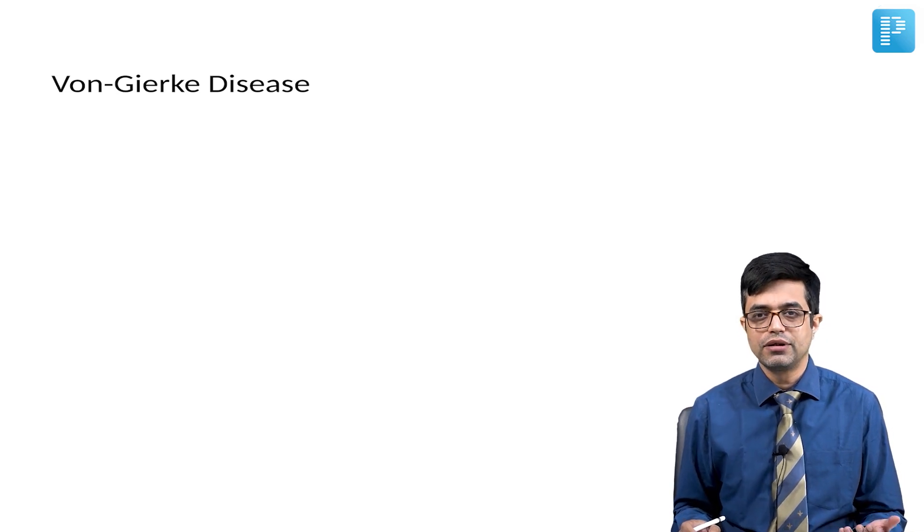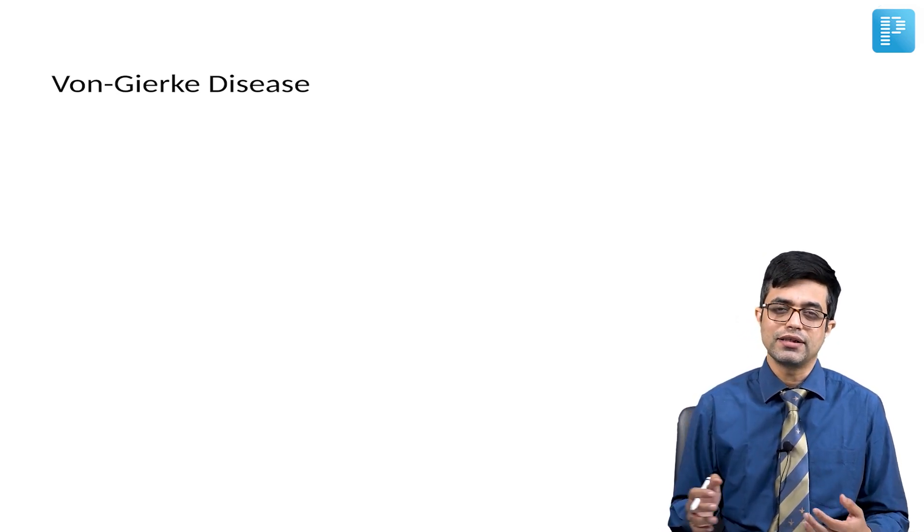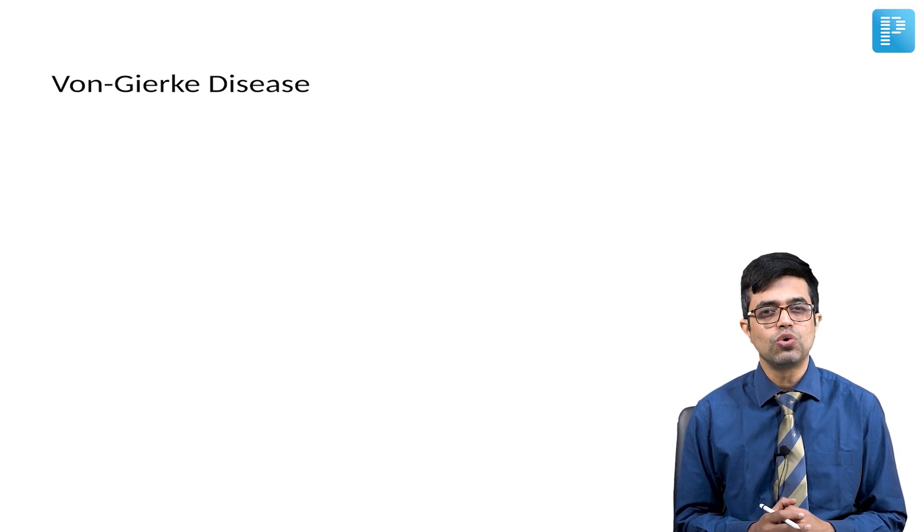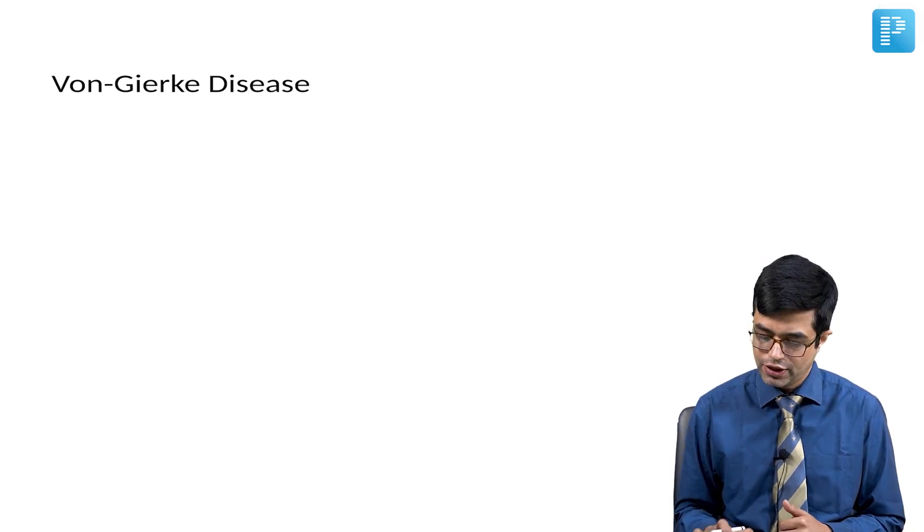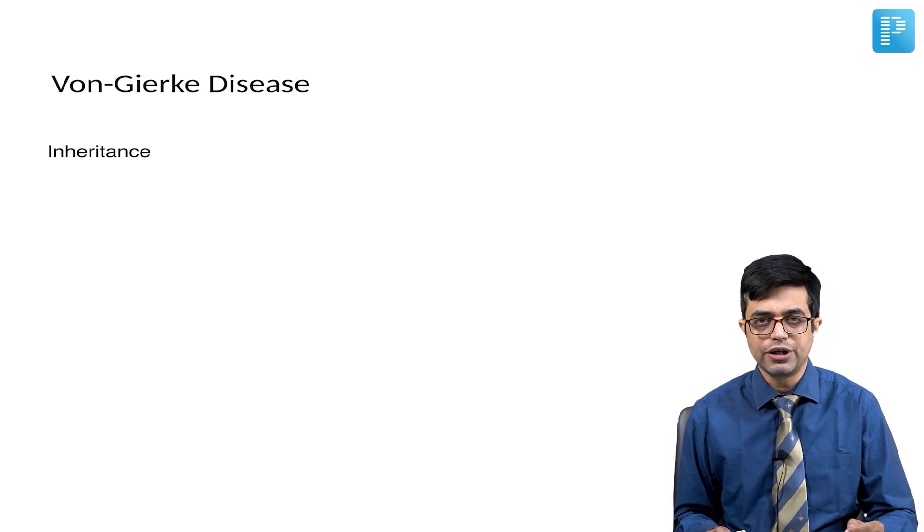It is one of the earliest described glycogen storage diseases, and in the classic form there is deficiency of glucose 6-phosphatase enzyme. What is the inheritance of this disease? As I have already told...